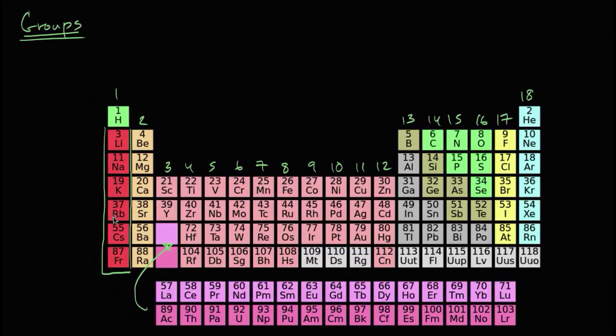And that's because the elements in a column or the elements in a group tend to have the same number of electrons in their outermost shell. They tend to have the same number of valence electrons.